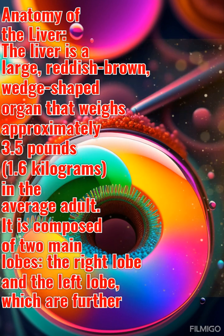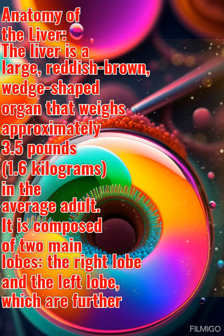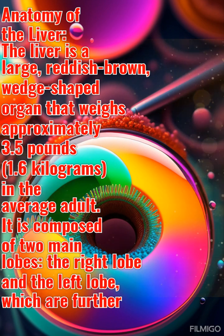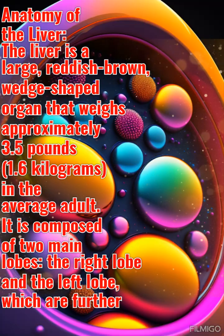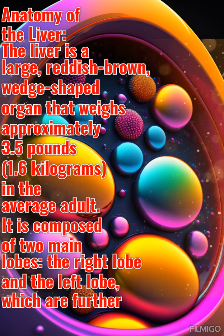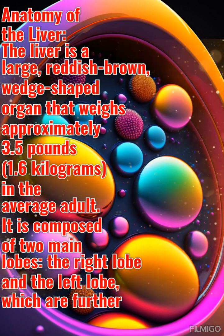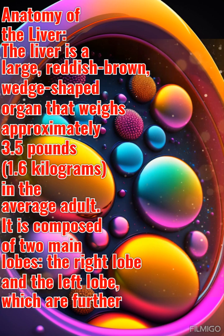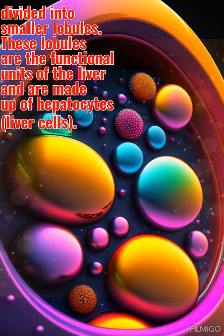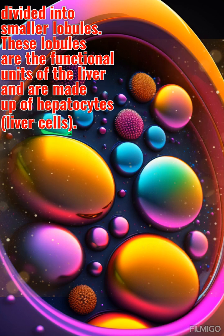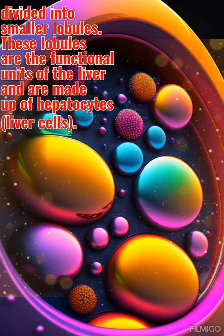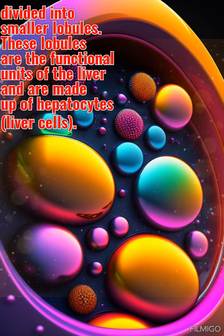Anatomy of the liver: The liver is a large, reddish-brown, wedge-shaped organ that weighs approximately 3.5 pounds, around 1.6 kilograms, in the average adult. It is composed of two main lobes — the right lobe and the left lobe — which are further divided into smaller lobules. These lobules are the functional units of the liver and are made up of hepatocytes, or liver cells.